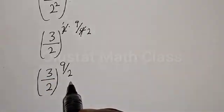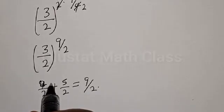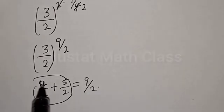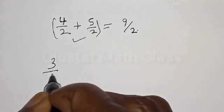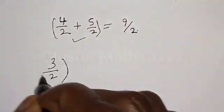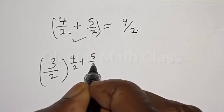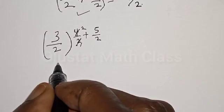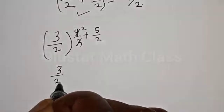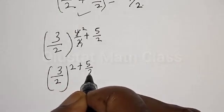Now 9 over 2 can be written as 4 divided by 2 plus 5 divided by 2. Substituting this into the equation, we have 3 divided by 2, all raised to the power 2 plus 5 divided by 2.